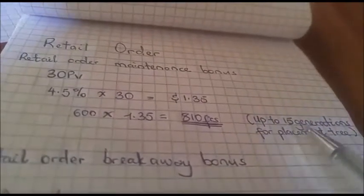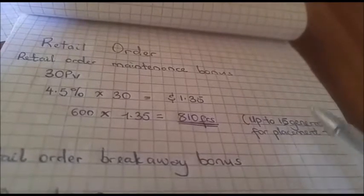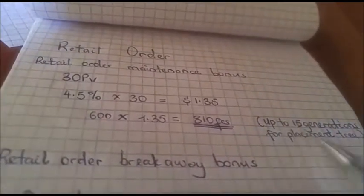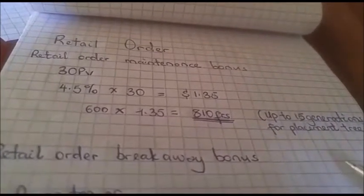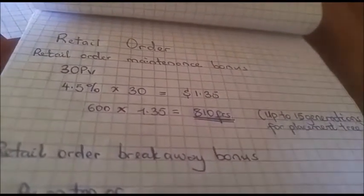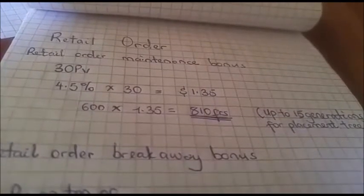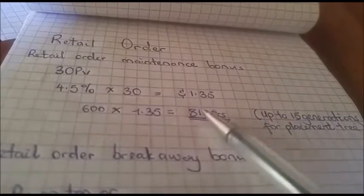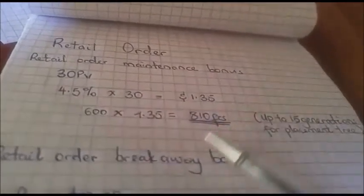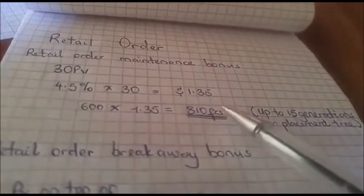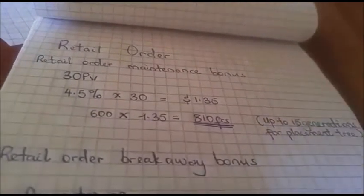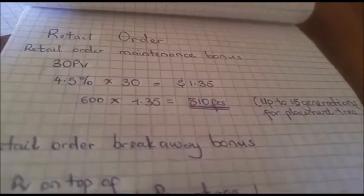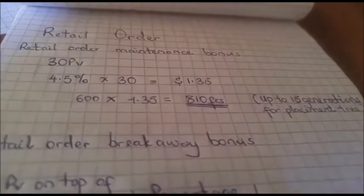That means even for people in your network whom you did not sponsor, maybe your upline placed somebody under you, up to the 15th generation. So imagine in your network, 100 of your members did the maintenance of 30 PV. You're going to multiply 810 francs times 100, which is 81,000.